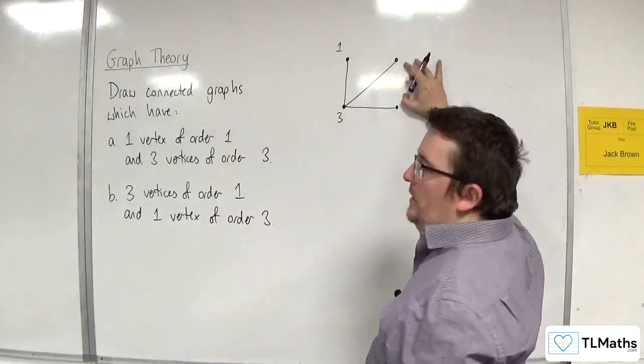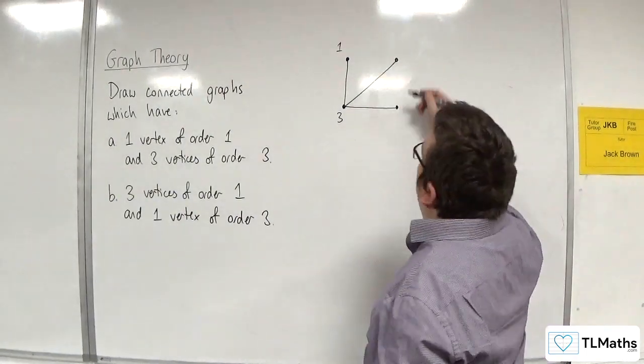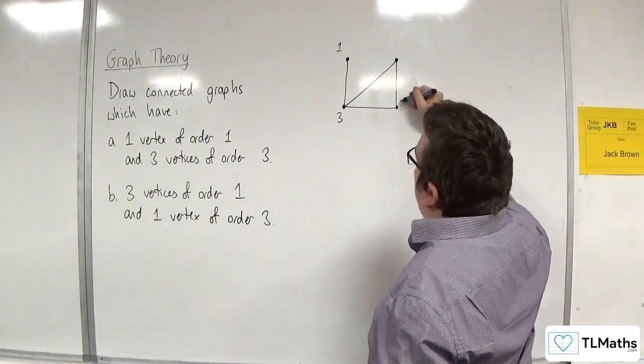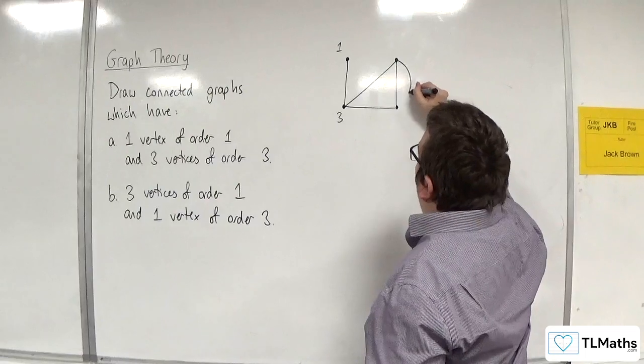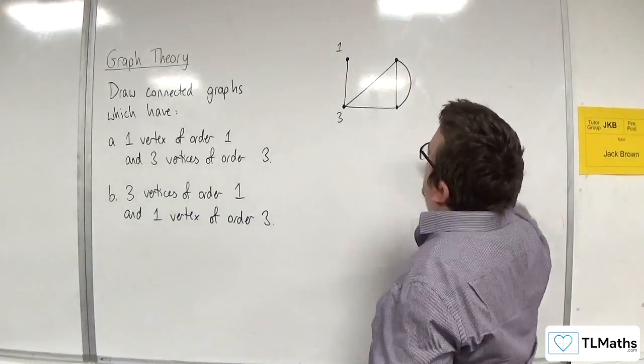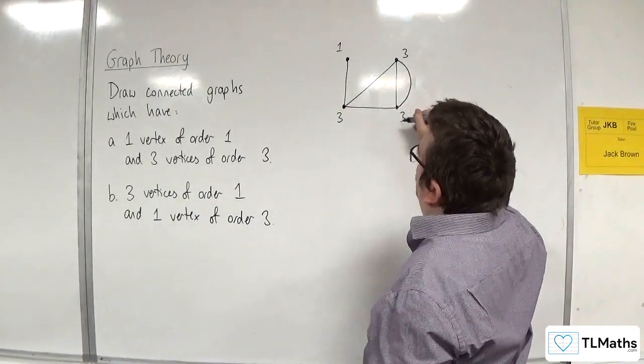So now I need these two to have order 3. If I connect them, that now means they've both got order 2. And then if I add in a multiple edge,